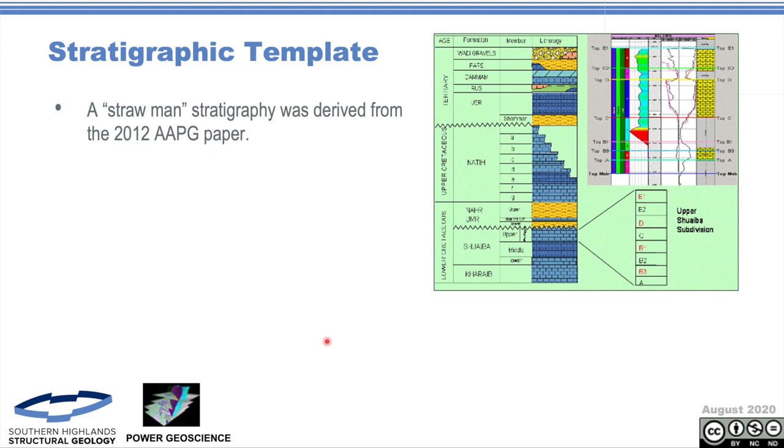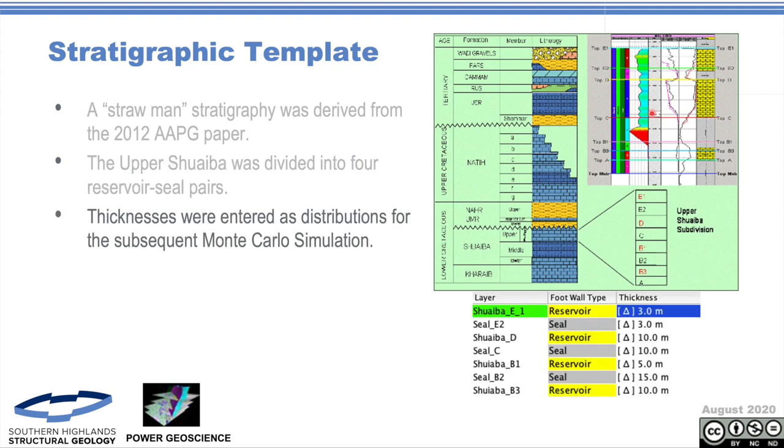So in terms of the stratigraphy, this paper is fantastic. It actually gives us the basics that we need to do an analysis. We can actually see that we've got these different stratigraphy. This is the Shoeba reservoir, which is common through the region, is our main reservoir type. We didn't do this for anyone, so we've divided it into four as per the paper. We've estimated the thicknesses. We've got a three meter top reservoir, a 10 meter D reservoir. The B1 is five meters and the B3 is 10 meters. They're putting these distributions plus or minus 10 meter error, plus or minus 5 meter error on them.